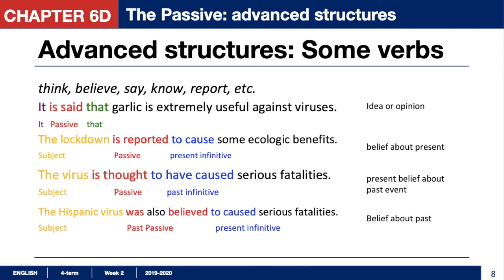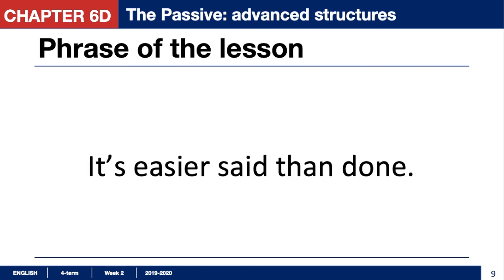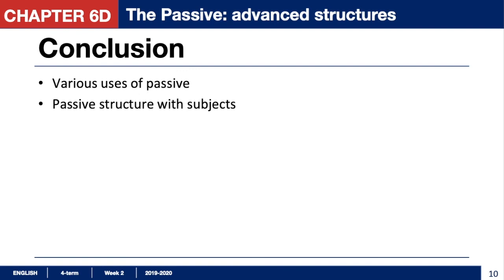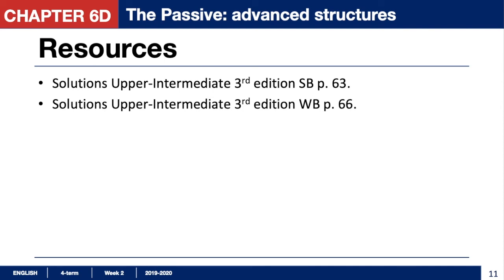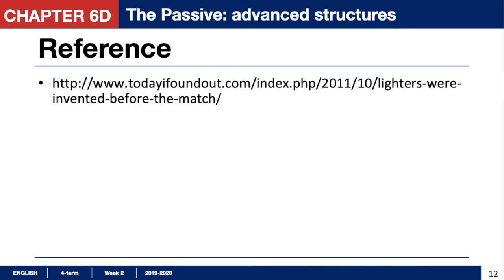So passive can be used not only to hide the subject but also to express ideas, opinions, and beliefs in the present and past. The phrase of today's lesson is: 'It's easier said than done.' About the passives — we should sit at home and keep calm. The conclusion is there are various uses of passive in different situations, and there can be passive structures with a subject, which should also be kept in mind. For further practice, see your Solutions Upper Intermediate Student's Book page 63 and Workbook page 66.